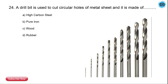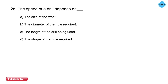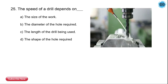The 23rd question is: a drill bit is used to cut a circular hole in sheet metal and it is made up of what material? The options are high carbon steel, pure iron, wood, and rubber. The correct answer is high carbon steel — the drill bit is made up of high carbon steel.